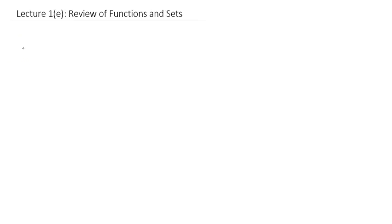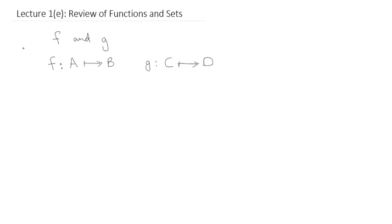In this video we're going to be talking about some of the operators that we're going to be applying to functions and what the result of these operators gives us. So let's assume we have two functions f and g. f maps a set A to set B and g maps a set C to set D. These two sets over here are not related to these sets over here.